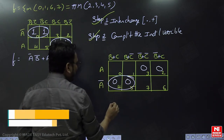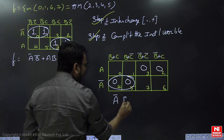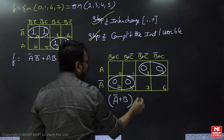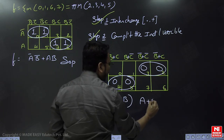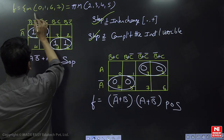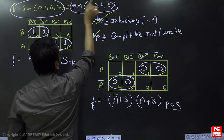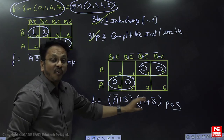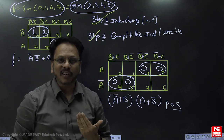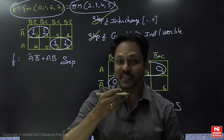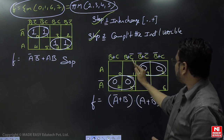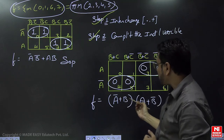Now if we make a group on this side, we get A-bar, and between them the operator is plus — giving (A-bar + B). On the other side we get A and (A + B-bar). In this manner we get the Product of Sums form. We made two changes: number one, interchange the operator — where we had dot we replaced it with plus; number two, complement the individual variable — wherever a bar was present we removed it, and wherever it was absent we added it. Then we grouped and obtained the POS form.